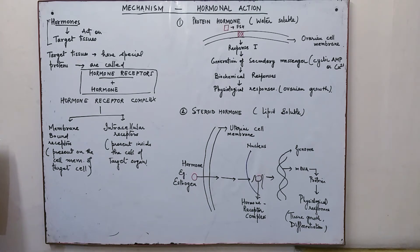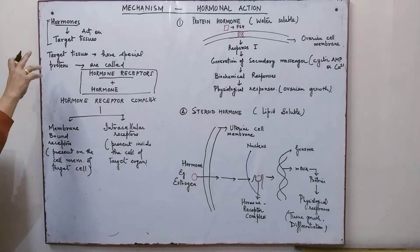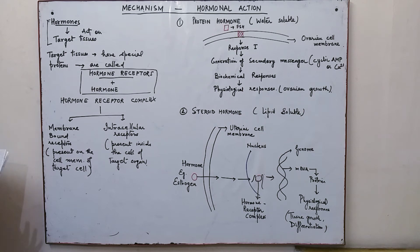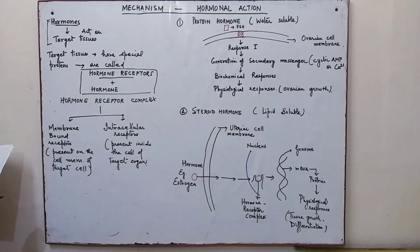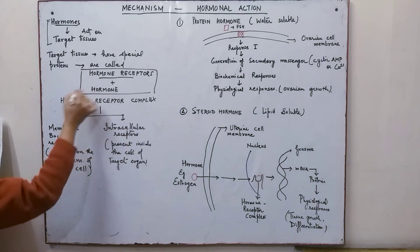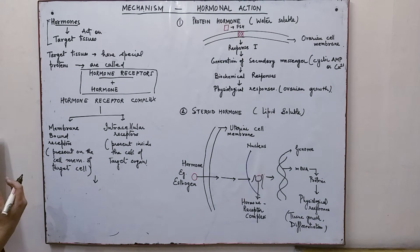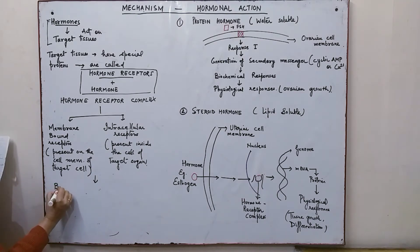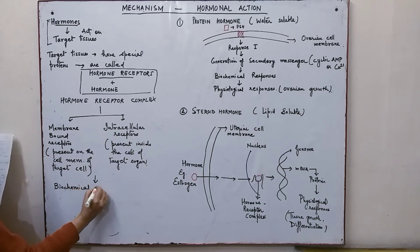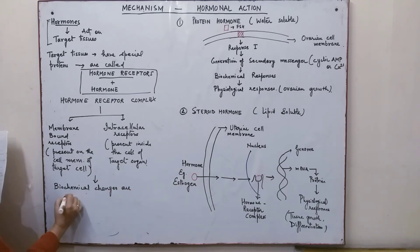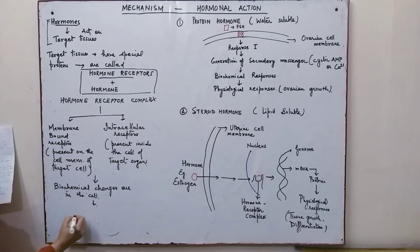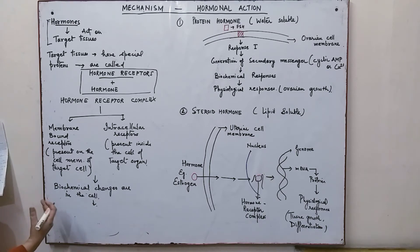There are certain nuclear receptors which are present within the nucleus. These hormones are highly specific and will bind specifically to a particular type of hormone. This hormone-receptor complex formation results in a series of biochemical changes brought about within the cell.